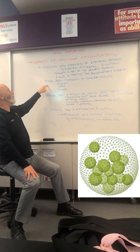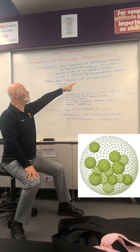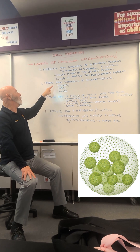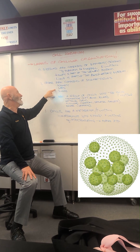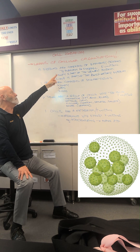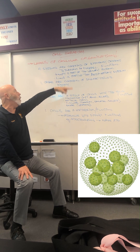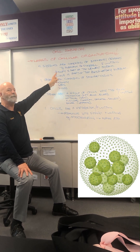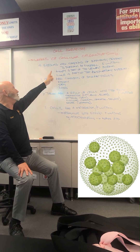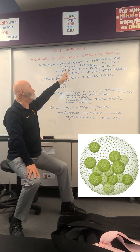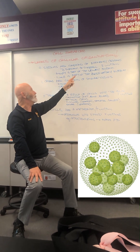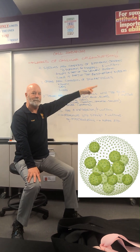Then we have organs that are composed of several tissues — kidneys, skin, and lungs. Last of all, we have systems that are composed of different organs to perform an overall function. For instance, the kidney is part of the urinary system and the lung is part of the respiratory system.